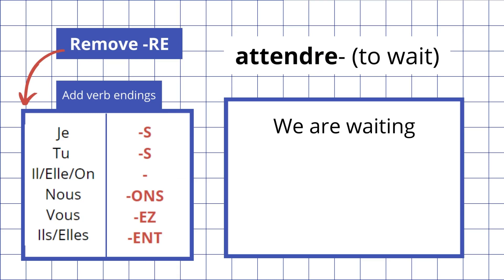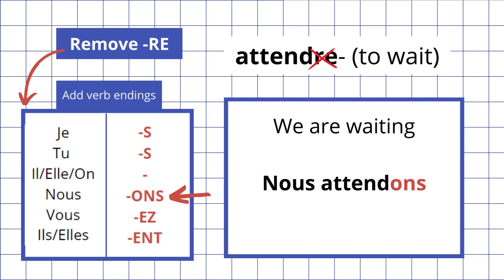We are waiting. In French, when we have the present tense, we use the same form for both. In English, we wait and we are waiting are two separate phrases, but in French we use the same present tense for both. So we remove the RE and add the correct verb ending — we is nous, so the nous form has the ONS ending: nous attendons.